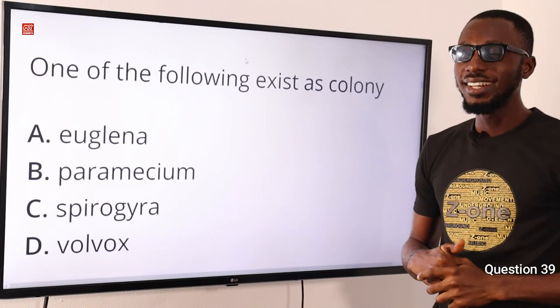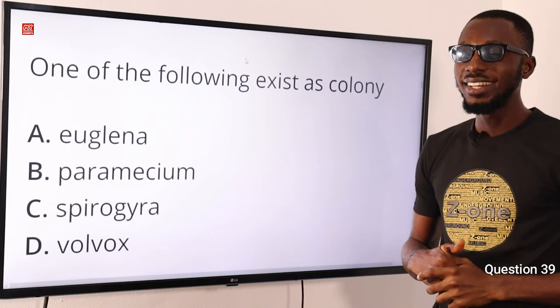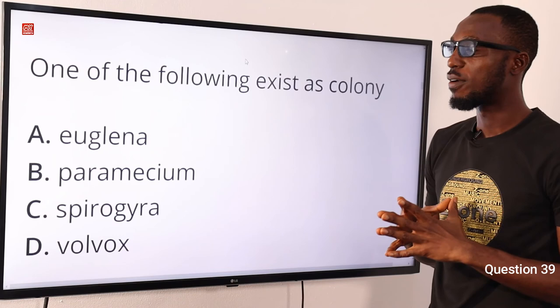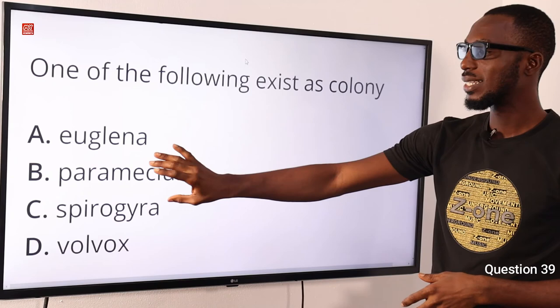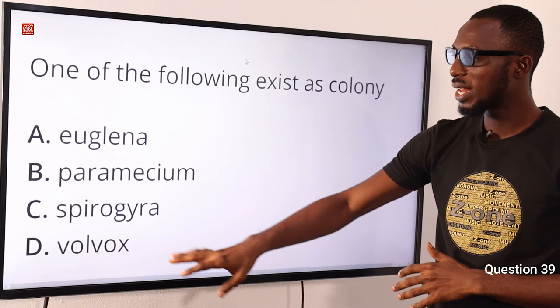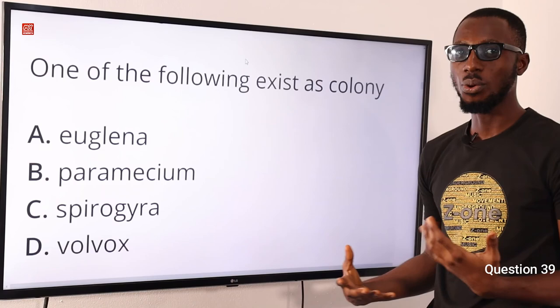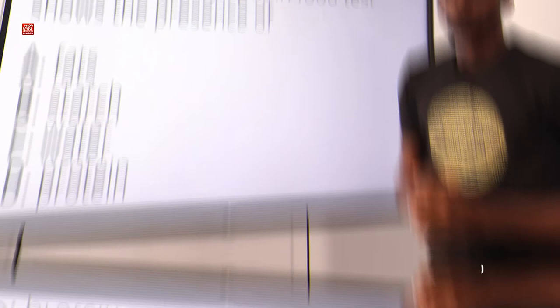Question 39: One of the following exists as a colony. Euglena and Paramecium belong to the phylum Protozoa under the kingdom Protista — other examples include Amoeba. Spirogyra and Volvox belong to the kingdom Plantae, phylum Thallophyta. Spirogyra exists as filaments while Volvox exists as a colony. So the correct option is option D for Volvox.